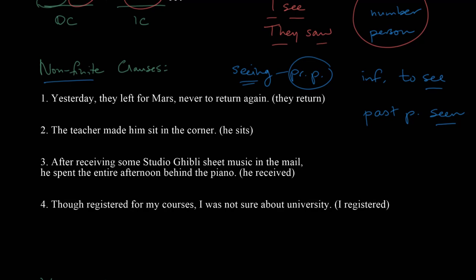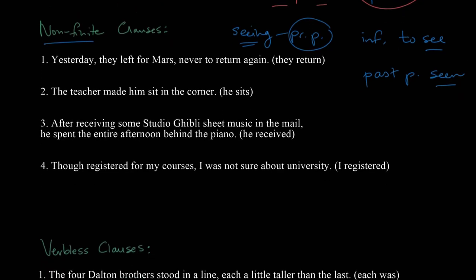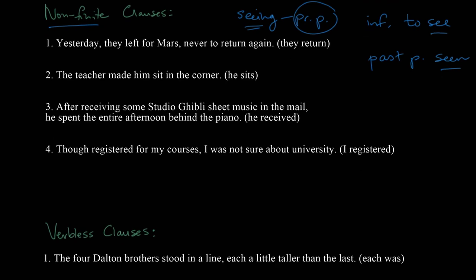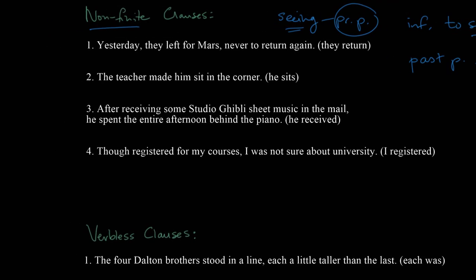It's missing some of the stuff we would expect to see normally, but there's enough here to say, hey, this is still a clause. And there are four non-finite clauses then, starting with the first one. Here we have 'yesterday they left for Mars,' that's an independent clause, and then this last bit, 'never to return again.'